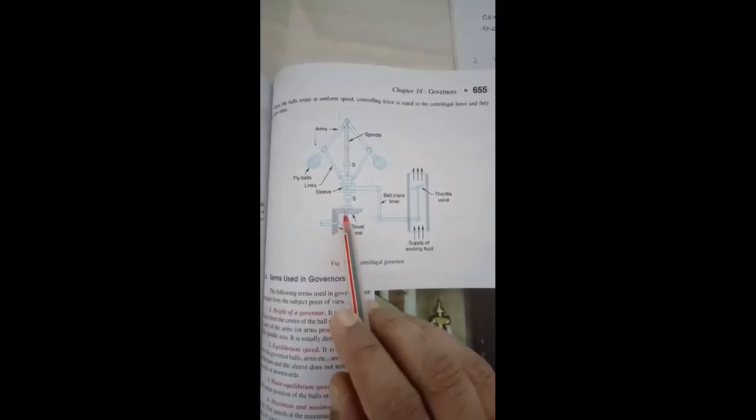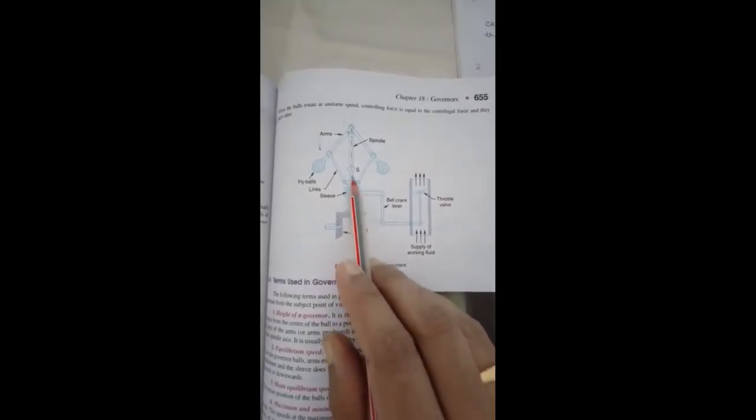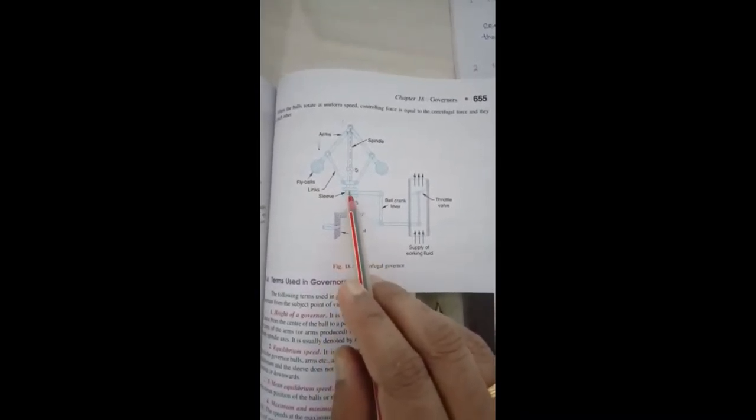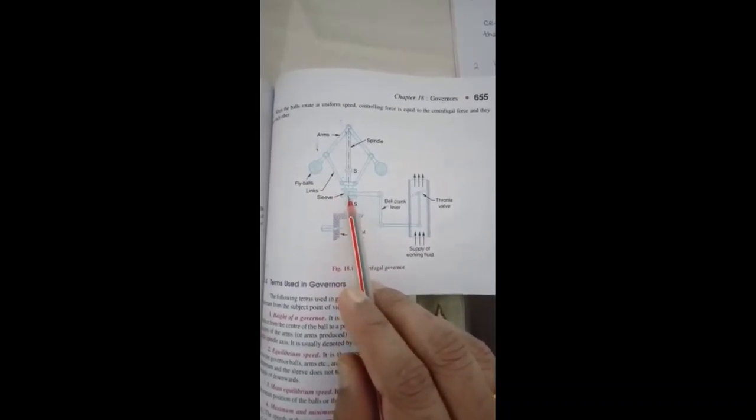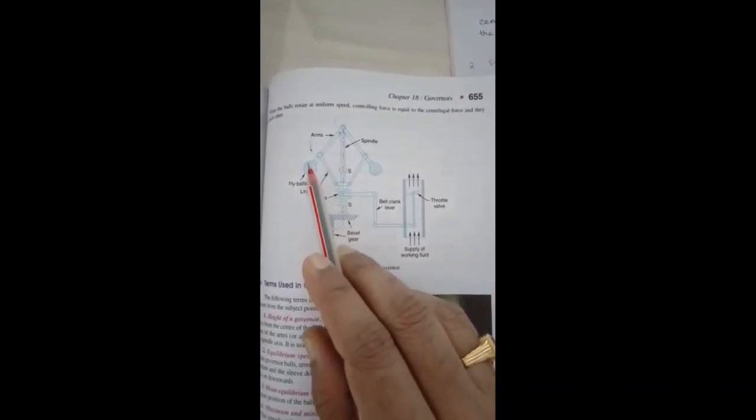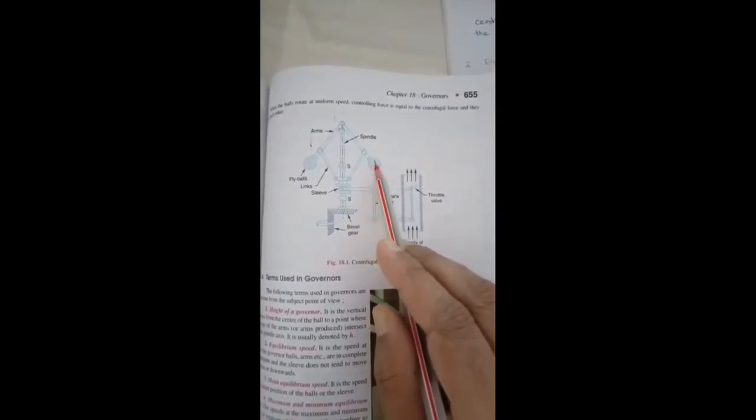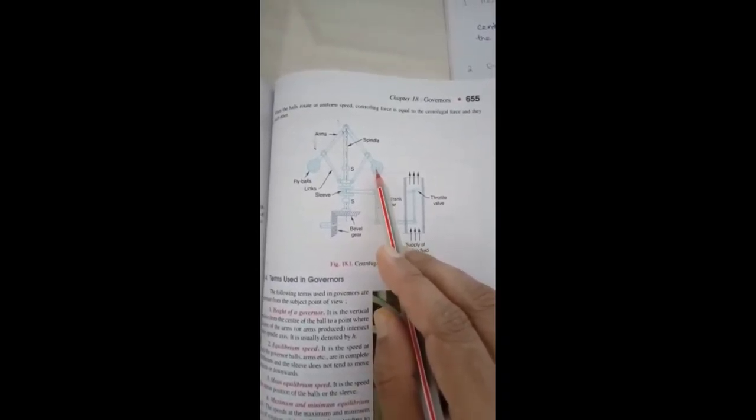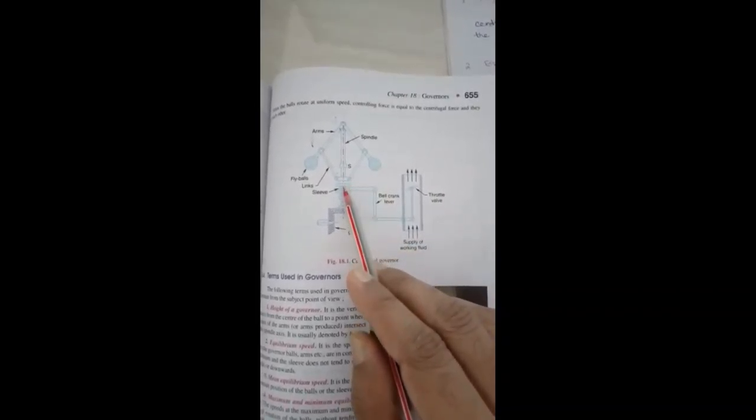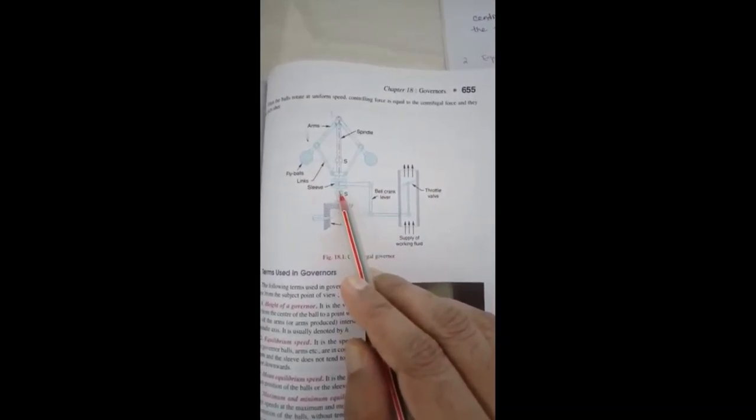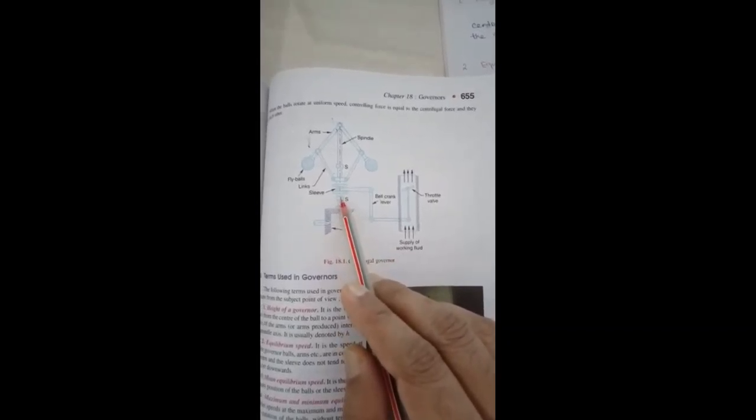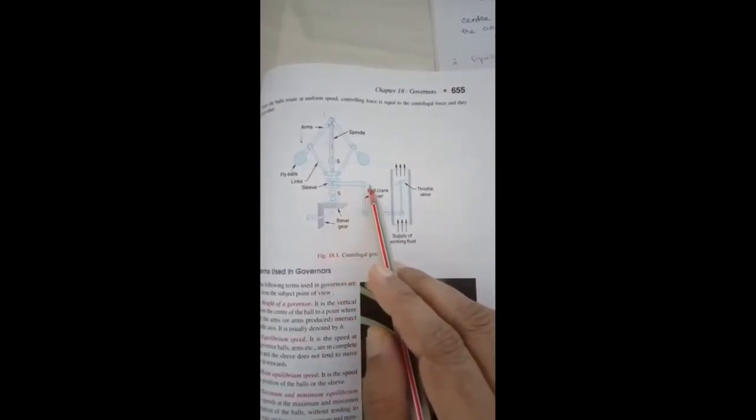This is connected to this gear, that means this spindle will move at lesser speed. That means this ball will fall down. As the ball falls down, centrifugal force will be less. It will fall down, then it is connected to this sleeve. This sleeve will fall down.